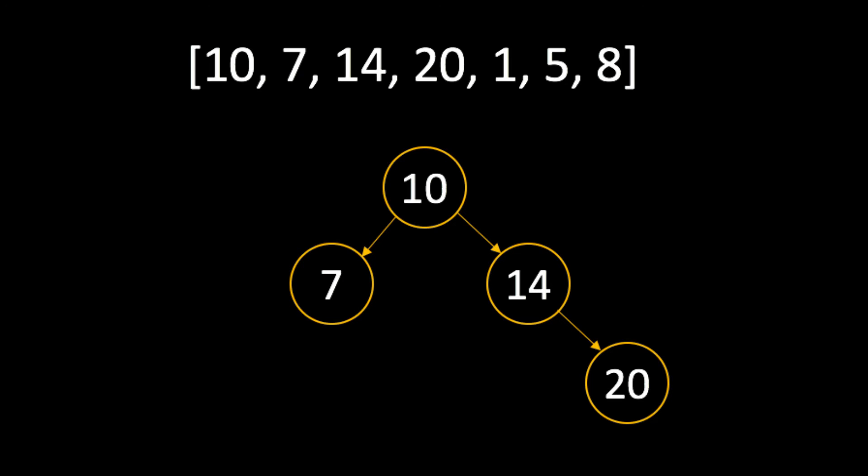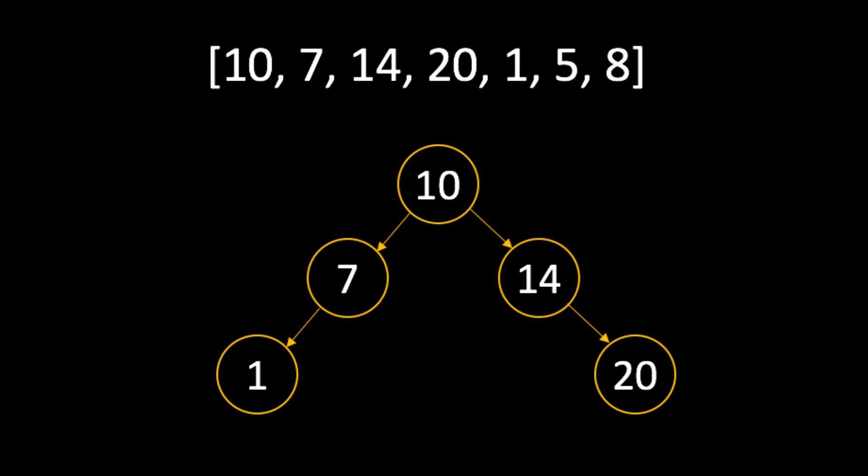Our tree is coming along nicely. Now we have the value 1. Following the same pattern as the other values, we will compare 1 to 10, move it to the left, and compare it with 7. And finally, make 1 the left child node of the 7 node.